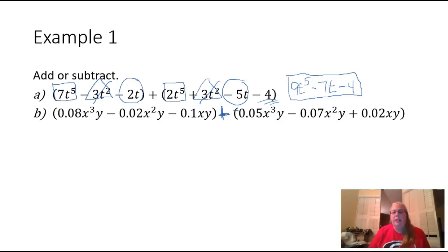Now what that's going to do is change this sign on the 0.05 and make it a negative. It's going to change the sign right here on the 0.07 and make it a positive. And it's going to change the sign on the 0.02 and make it into a negative. And now we have just another addition problem like we had in part A.